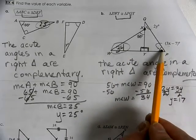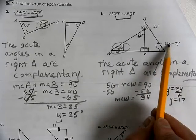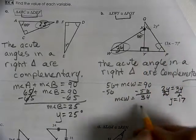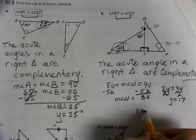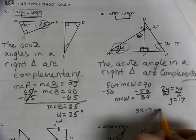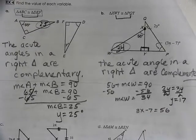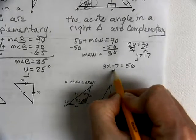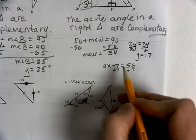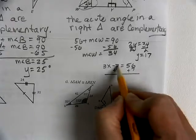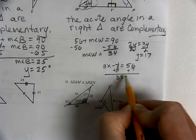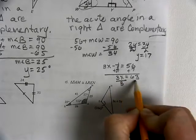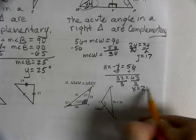Now, we have to figure out this one. We know that 3X minus 7 is going to equal the 56. So, 3X minus 7 is going to equal the 56. We add the 7 across. That becomes 63 and when we divide, we get 21.